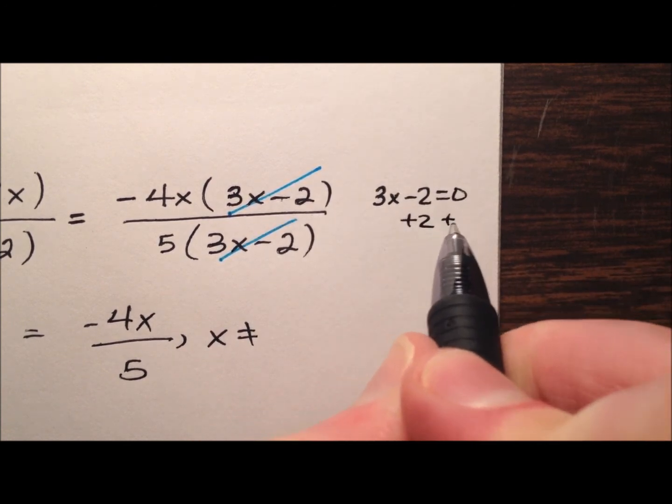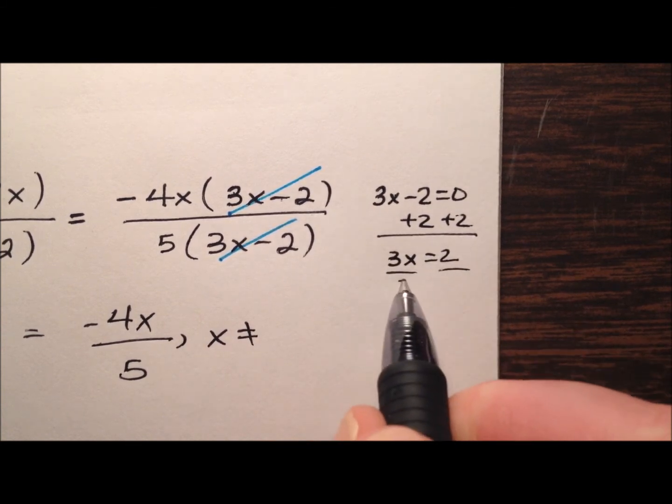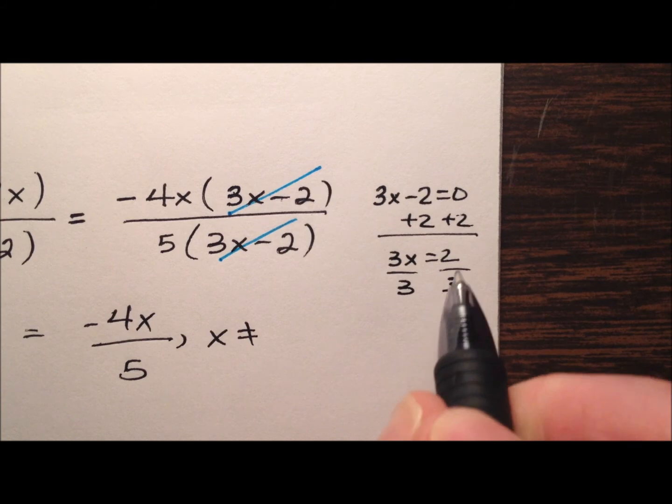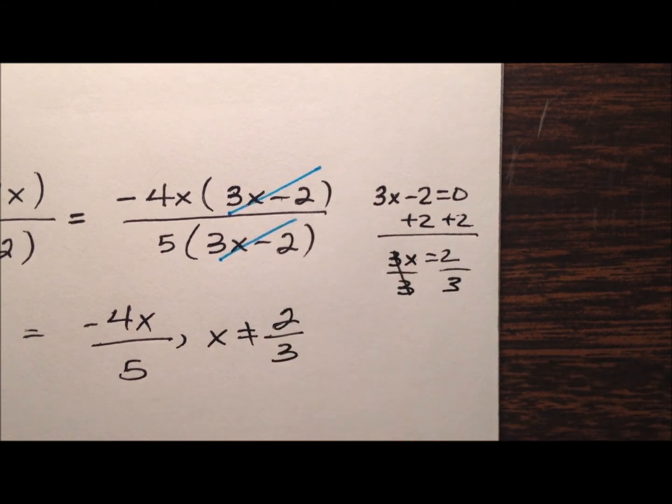Well, I'm going to add 2 to both sides. So 3x equals 2. And then when I divide by 3, looks like x. So in this case, x cannot be 2 thirds.